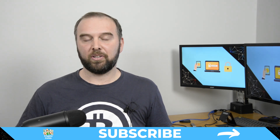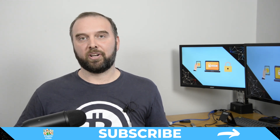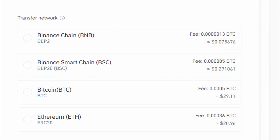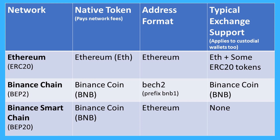If you try to withdraw funds from Binance, you'll notice you're given a number of options for different transfer networks to choose from. Firstly, this entire language of 'transfer networks' is deliberately misleading and confusing — there is no such thing. A tokenized representation of a cryptocurrency is not the same as that cryptocurrency.